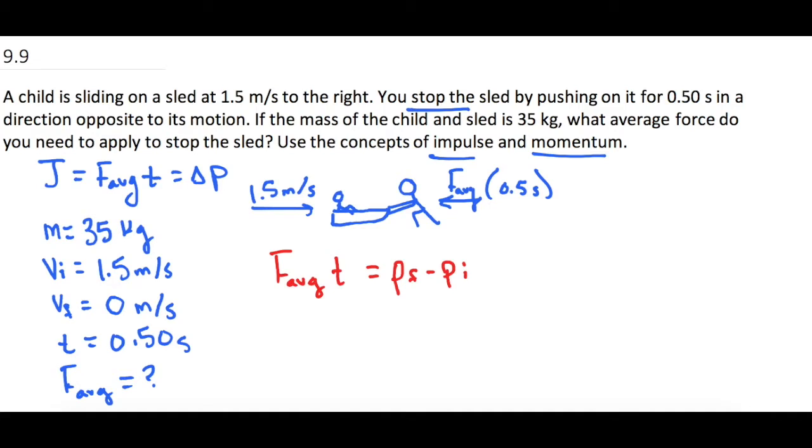So let's go ahead and solve it algebraically. In this case, it's pretty simple. We are trying to isolate the average force. So if we divide by time, those go away. And then we divide by time. So now we have the average force is equal to the final momentum minus the initial momentum times time.